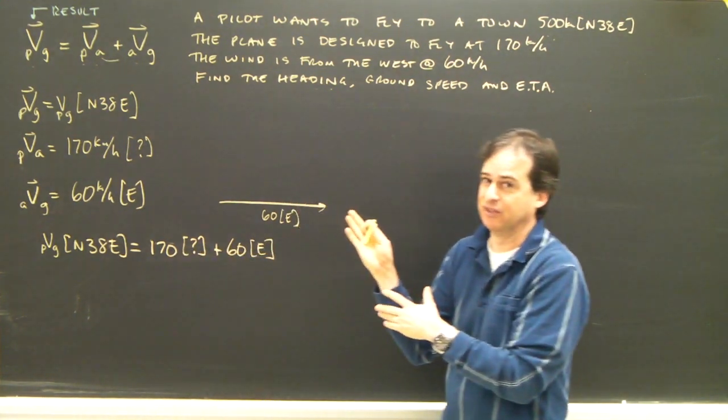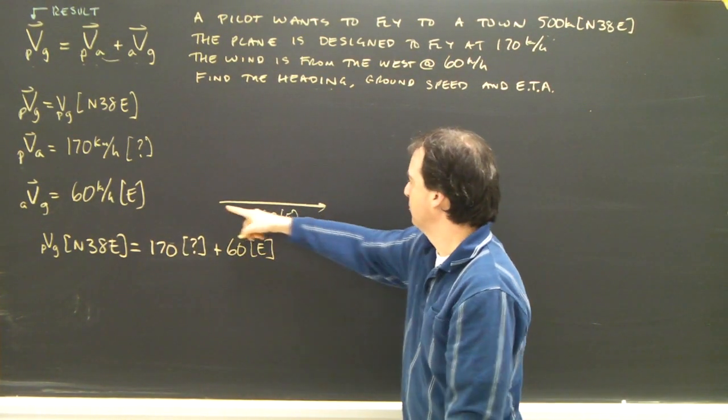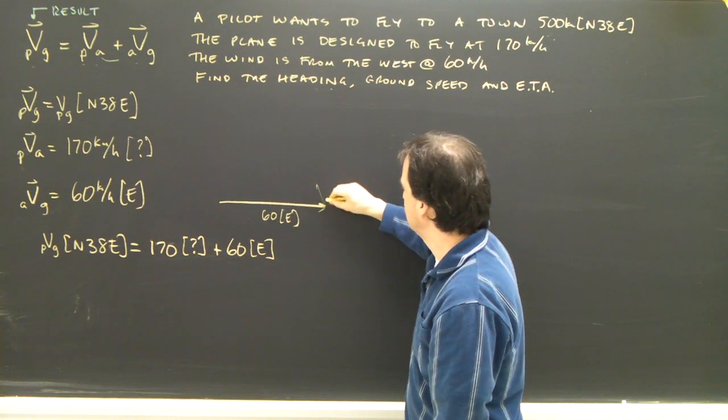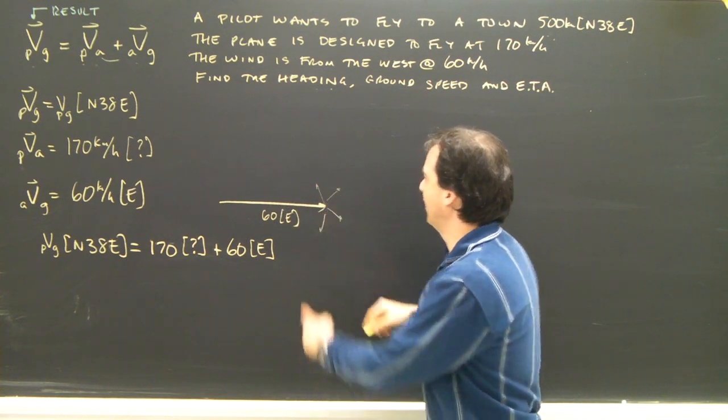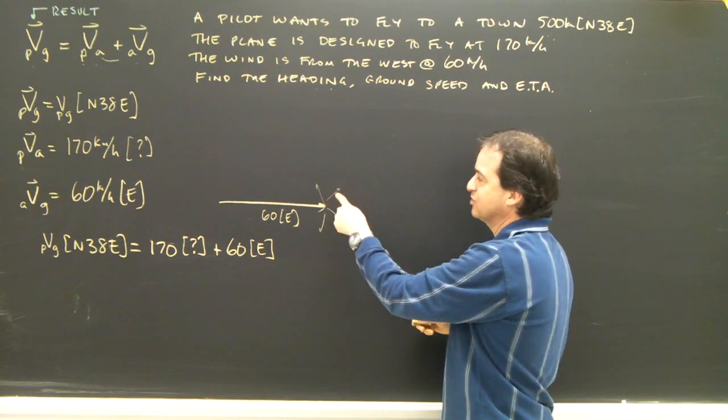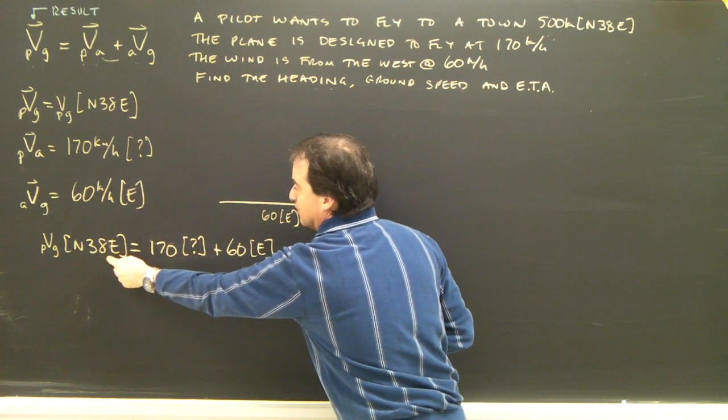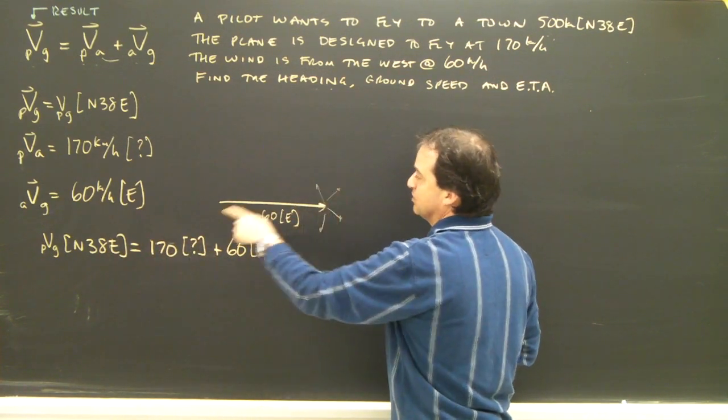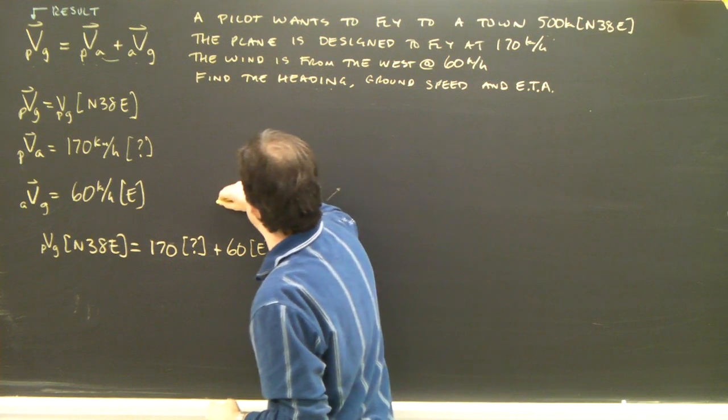The 170, as soon as I draw it, I'm giving it a direction. I'm not really sure about that. But I do know that 60 plus that 170, which could be in any direction, has got to end up intercepting this line. So this plus the 170 has got to hit this line. So let's draw that line.